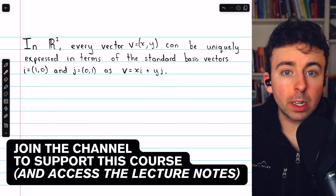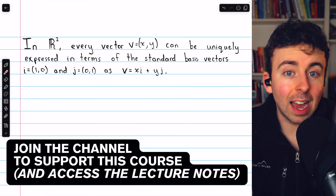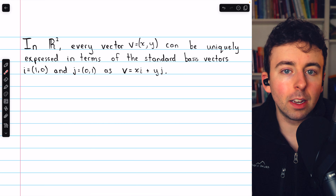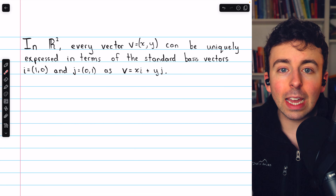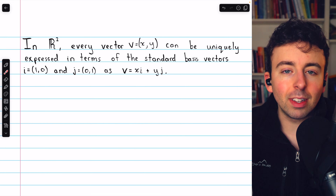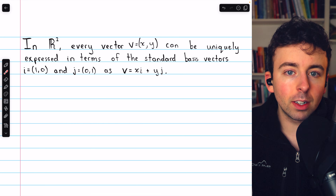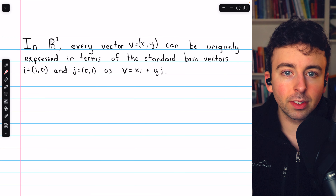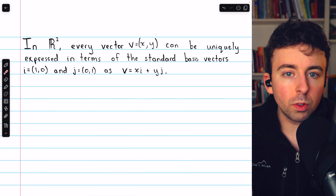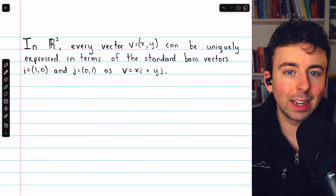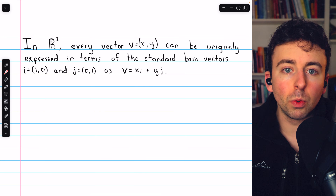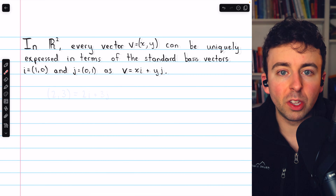Today we're introducing a very important concept: the idea of linearly independent vectors. We'll begin with some motivation, then we'll see the definition, some examples, and the theorem that we'll use in order to show that a set of vectors is linearly independent, and we'll do an example of using it.